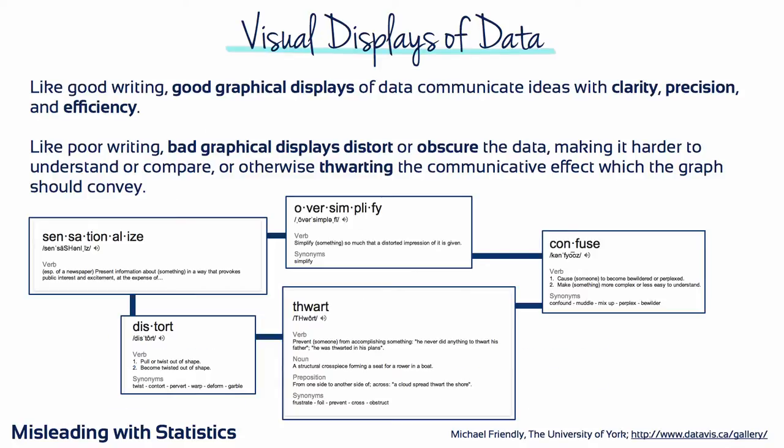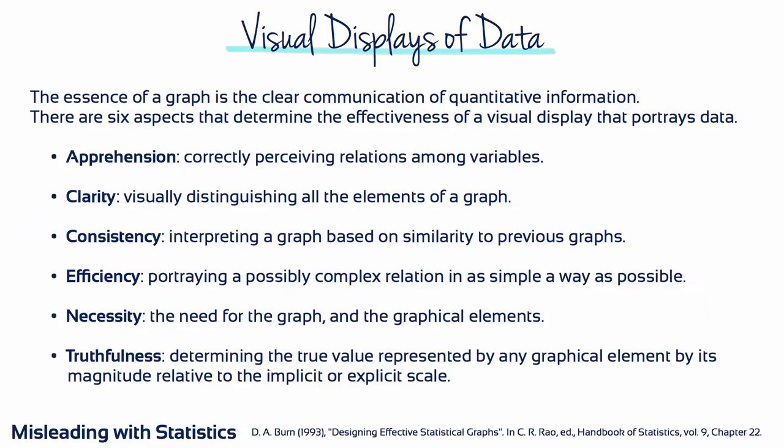Like good writing, good graphical displays of data communicate ideas with clarity, precision and efficiency, whereas bad graphical displays distort or obscure the data, making it harder to understand or compare, or otherwise thwarting the communicative effect which the graph should convey. The essence of a graph is the clear communication of quantitative information. There are six aspects that determine the effectiveness of a visual display that portrays data.